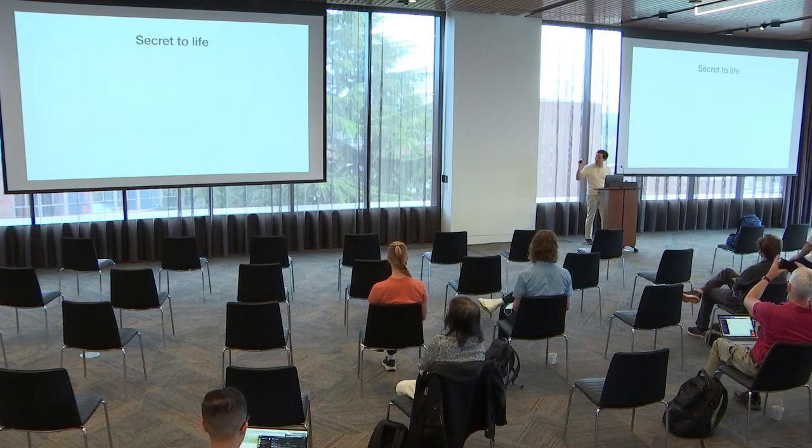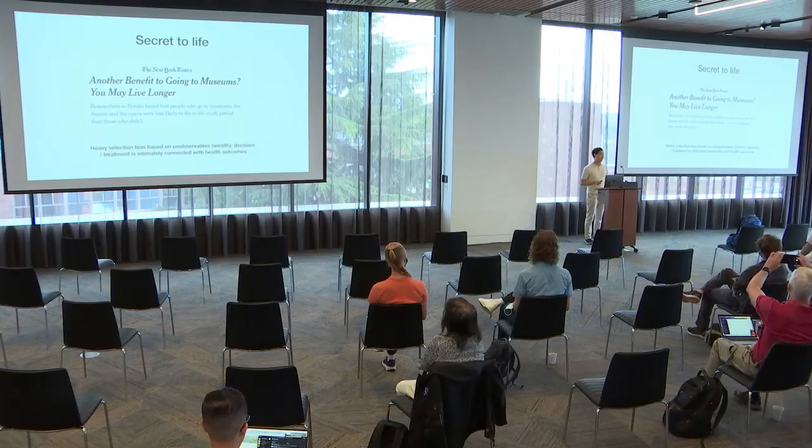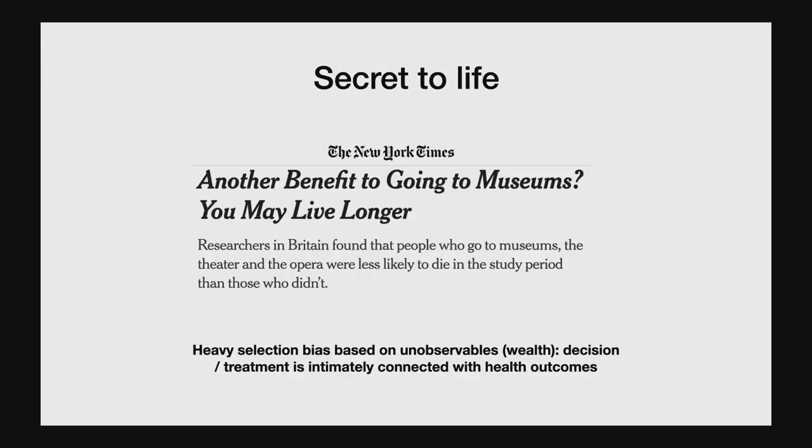Here is perhaps the most important slide of this talk. It turns out if you want to live longer, you should go to museums more. This clearly nonsensical result arises because there are unobserved confounders — for example, wealth — that simultaneously makes you more likely to go to museums and also allows you better access to good healthcare, making you more likely to live longer. It's a prime example of selection on unobservables.